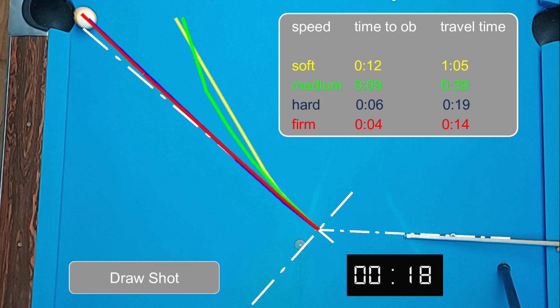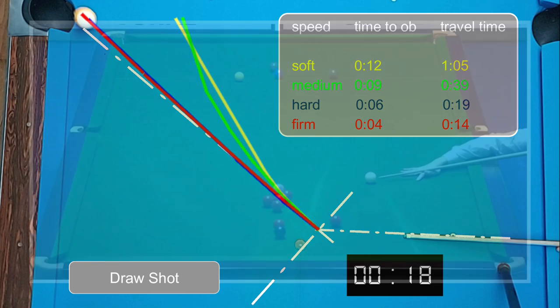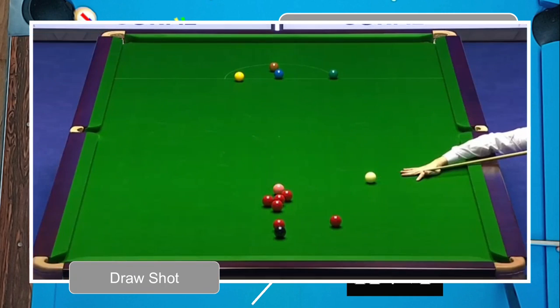What I find even more interesting is that the hard and firmly struck draw shots show almost no curvature or change in direction, but I have a theory about that too. Watch this power draw shot by Judd Trump on a 12-foot snooker table.